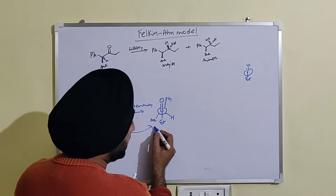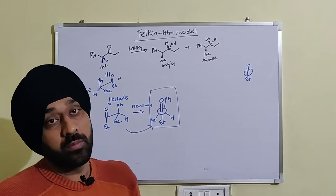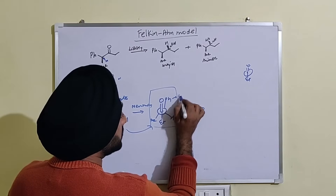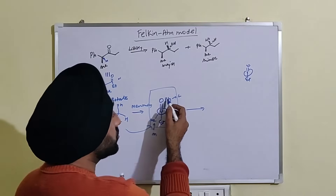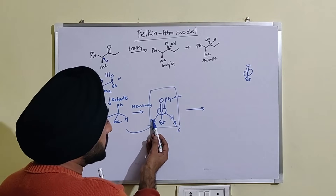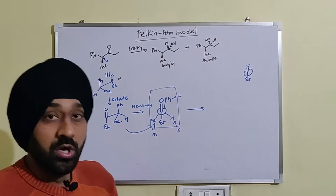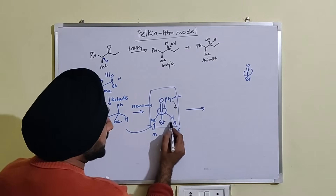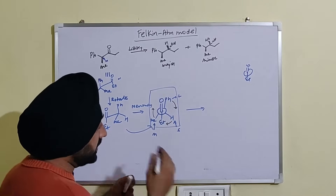Now, how do we convert this into the most stable Felkin-Anh conformer? We can see phenyl is the largest group, methyl is medium-sized, and hydrogen is the smallest group. The largest group has to be perpendicular to the carbonyl, and the methyl group must be away from the ethyl group. So we need to rotate the phenyl group in the clockwise direction — and as the back carbons rotate, methyl and hydrogen move accordingly.